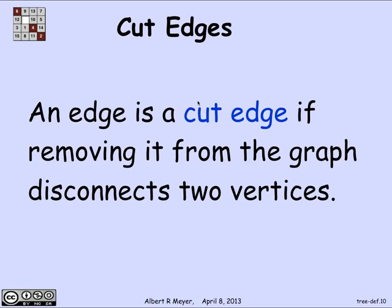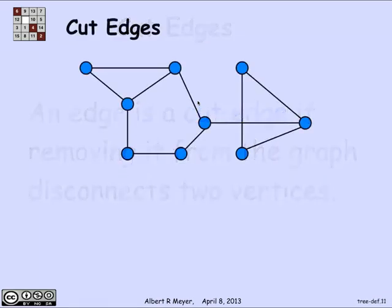So an edge in a simple graph is called a cut edge if, when you remove it from the graph, two vertices that used to be connected, that is used to have a path between them, ceased to have a path between them. So here's a simple graph illustration, and that edge E is a cut edge because if I delete it,